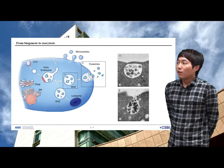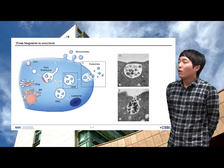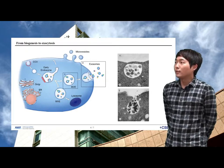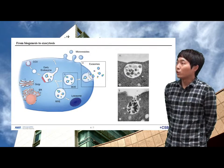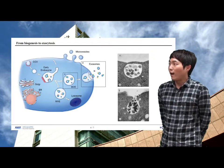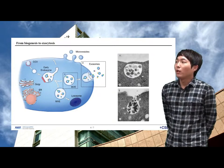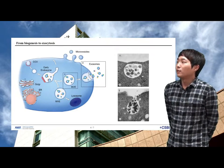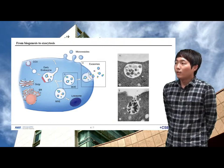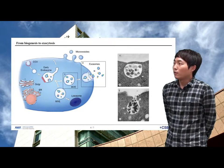Other multivesicular endosomes fuse with lysosomes. The point of divergence between these types of multivesicular endosomes is drawn at early endosomes, but the existence of distinct early endosomes feeding into these two pathways cannot be excluded.